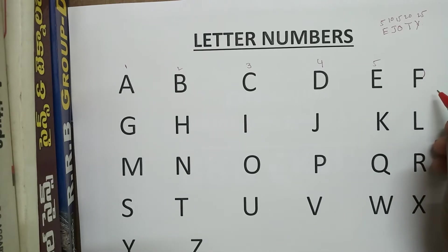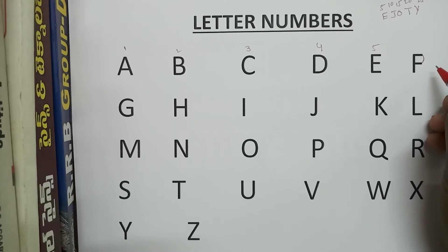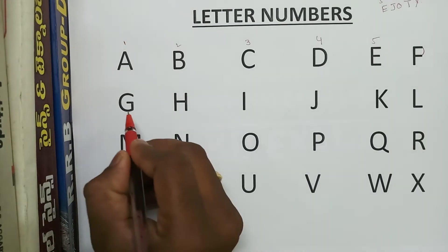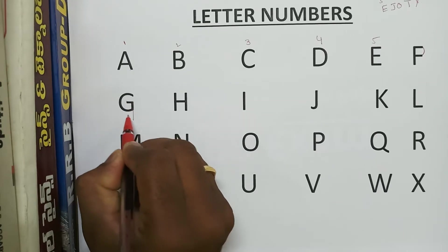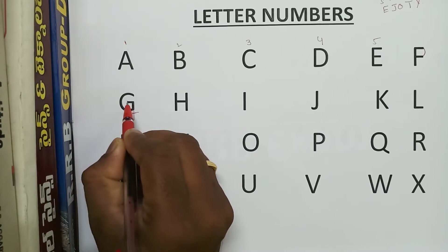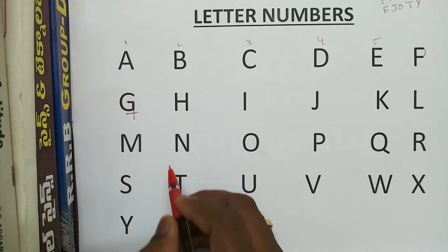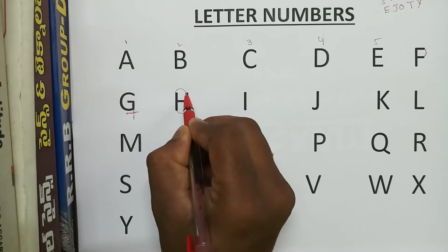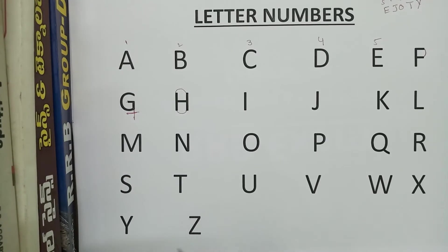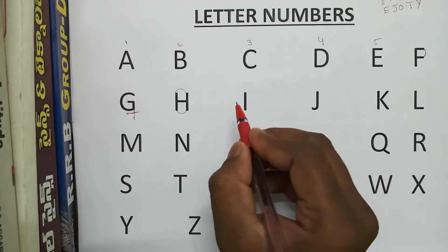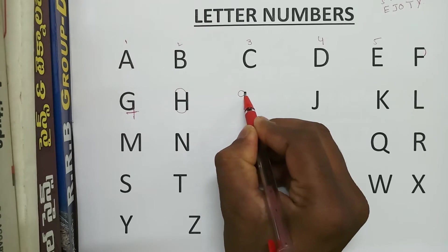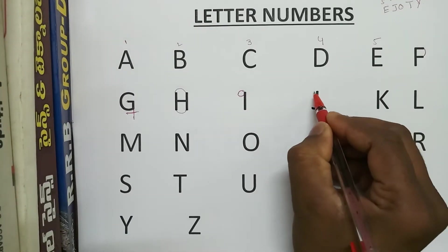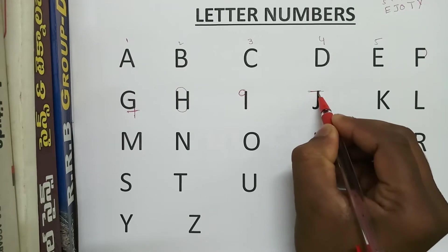F code is 6. Next, G code is 7. And H code is 8 — with the letter itself, see the number. H code is 8. I code is 9. J code is 10.